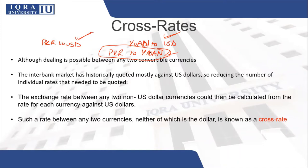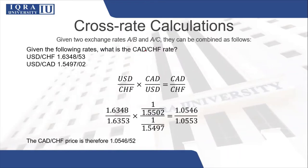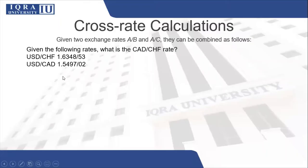Now let's look at a calculation. You have the following rates and you need to figure out the CAD to CHF rate. This is your cross rate. You are provided the USD to CHF rate and the USD to CAD rate.